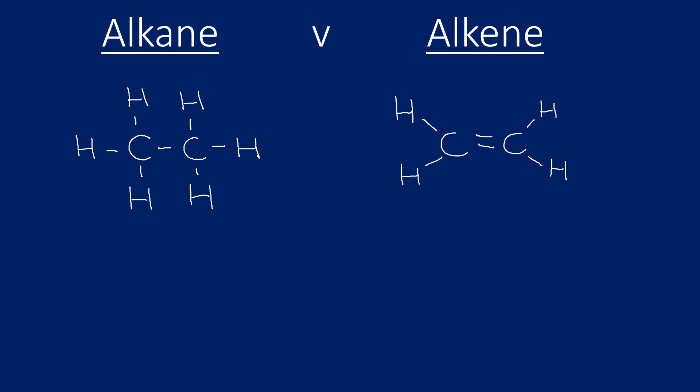Let's compare the strength of bonds in alkanes and alkenes. The bond between two carbons in an alkane is a single sigma bond, whereas the double bond in an alkene is a sigma bond and a pi bond. So the double bond is stronger than the single bond because of that additional pi bond. In terms of bond length, the rule of thumb is: the stronger the bond, the shorter the bond — so the bond in an alkene is also shorter and stronger than the bond in an alkane.